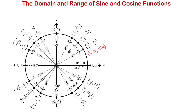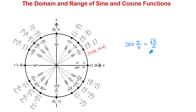For example, we can say that cosine of pi over 6 equals square root of 3 over 2. Here, pi over 6 represents the input and square root of 3 over 2 represents the output of this function.